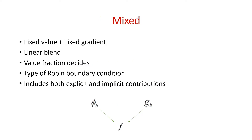So what is a mixed boundary condition? Mixed means two things are mixed: one is the fixed value and one is the fixed gradient. There is a linear blending of them — linearly mixing — and how much to take of φ_b and g_b is determined by the value fraction. φ_b denotes the fixed value and g_b denotes the fixed gradient, often given as the reference value and reference gradient. The value fraction f is a scalar from 0 to 1.